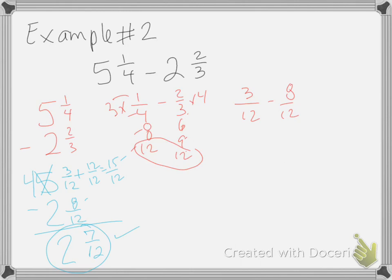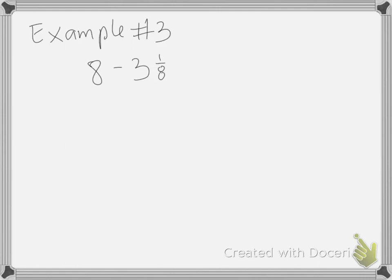Let me go ahead and do the next one. The last example. 8 minus 3 1/8. Well, this is going to be very simple. 8 minus 3 1/8. I'm going to regroup. So this is going to be... Because I have 0/8 right here.